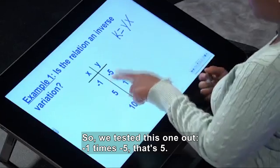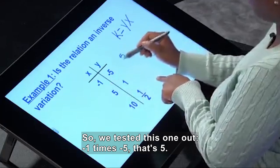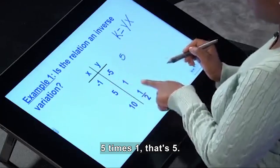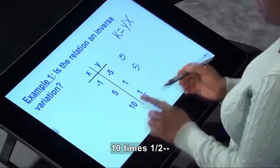So if we tested this one out, negative 1 times negative 5, that's 5. She writes... Okay, 5 times 1, that's 5.